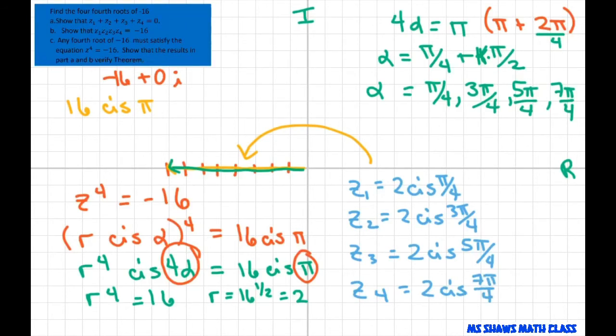Now these equal √2 plus i√2 when you write it in rectangular form. Negative √2 plus i√2. This one's going to be negative √2 minus i√2. And this one's going to be √2 minus i√2.